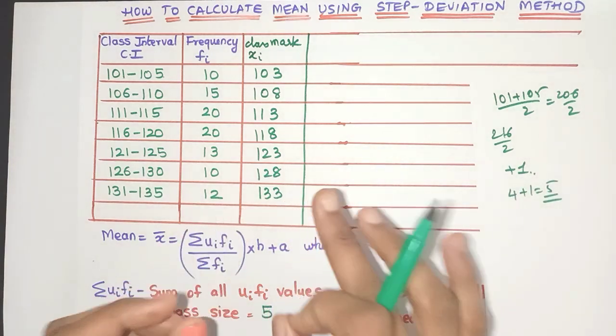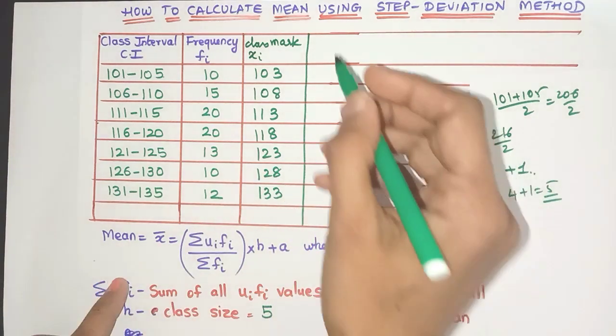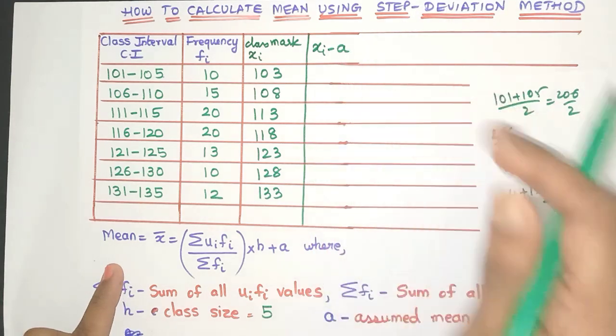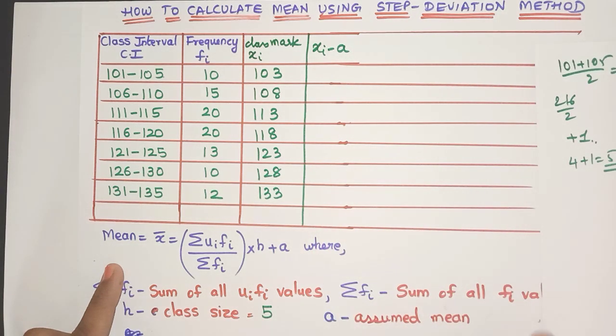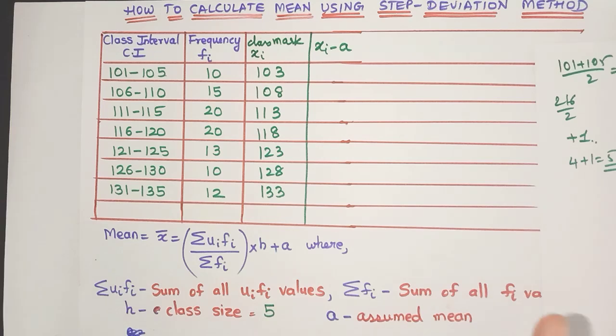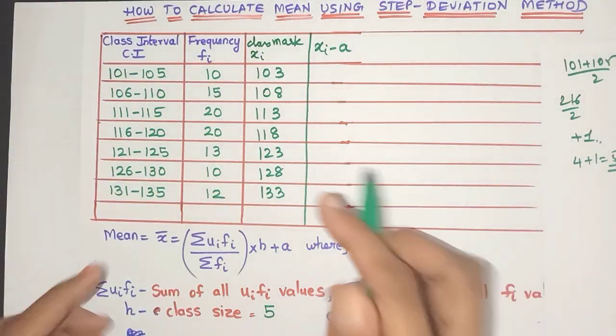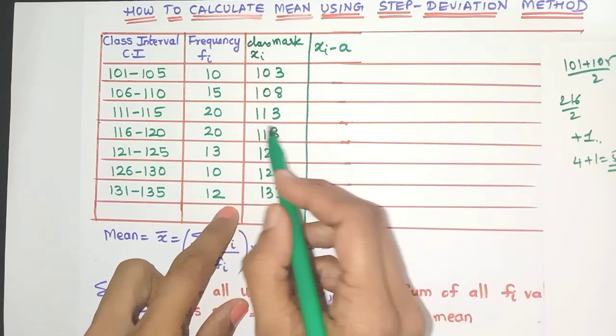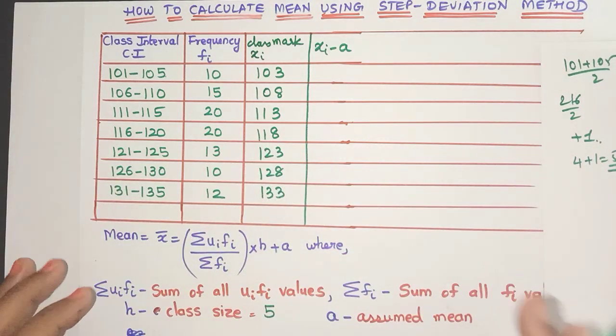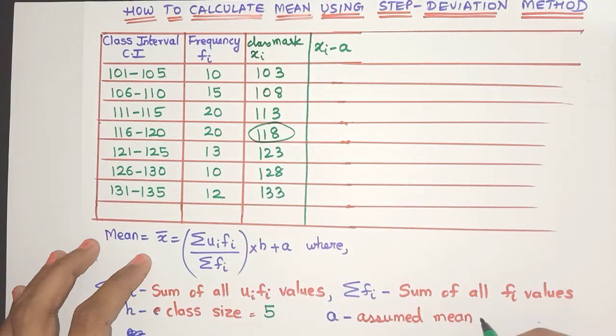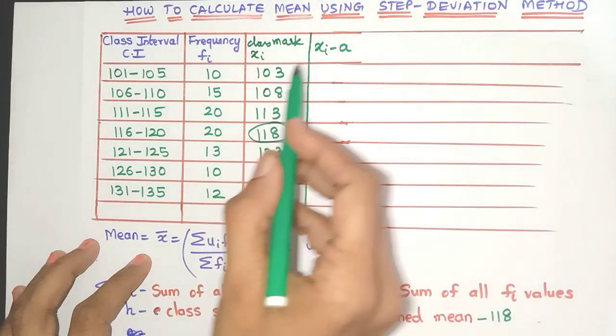So to make these numbers smaller, we create another column which is the xi minus a column. Now what is a? a is nothing but the assumed mean. So how to find it? Just choose any xi value, friends, from this column. But usually we choose the xi value which is around the middle so that we get very simple numbers. Okay? So that's why we are going to choose 118 as our a or assumed mean.